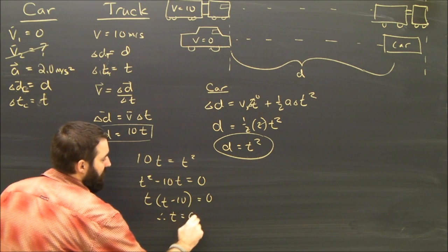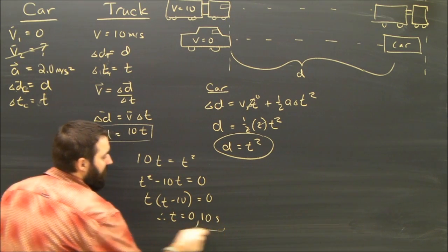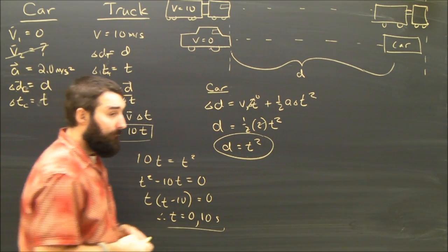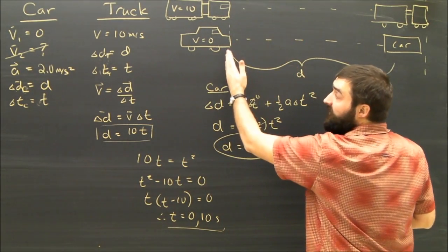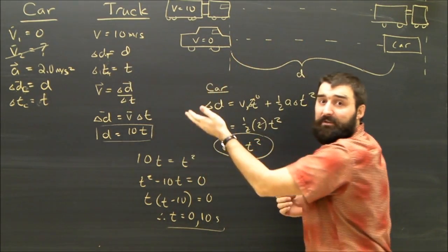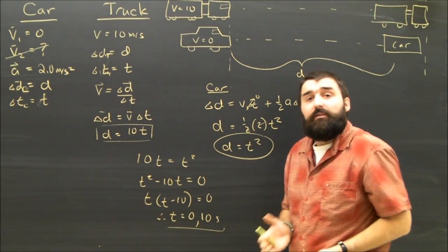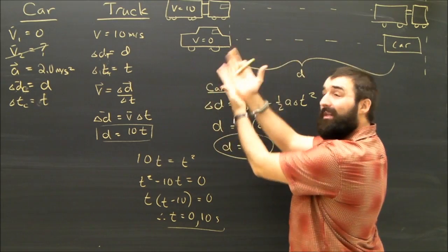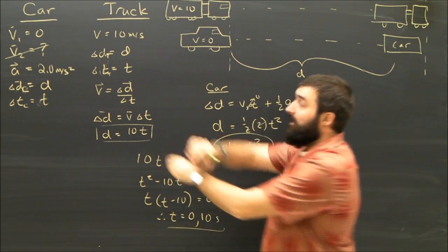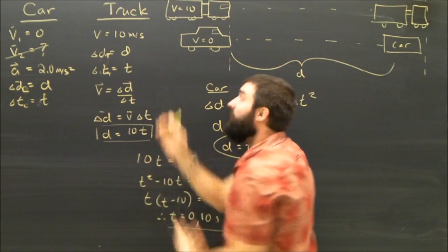and therefore T can either equal zero or 10 seconds. T can equal zero. Yeah, that makes sense, because at the start, these things had the same displacement. Their displacements were zero. They were at the same spot. We've asked the big five equations here to find when the car and the truck are at the same spot at the same time by putting D and T in their givens.